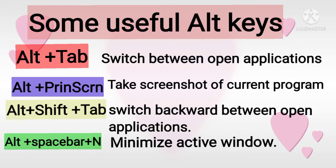First of all, Alt+Tab — it switches between open applications. Alt+Print Screen — it takes the screenshot of the current program. Alt+Shift+Tab — it switches backward between open applications. Alt+Spacebar+N — it minimizes the active window.